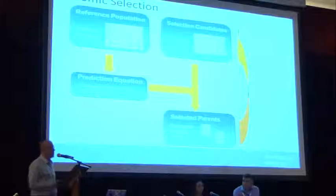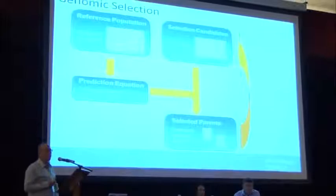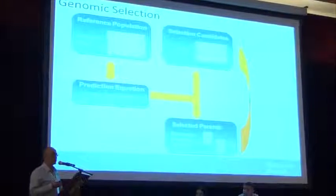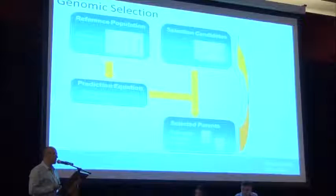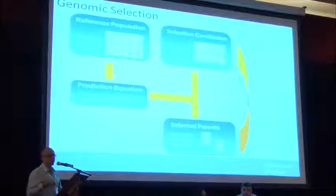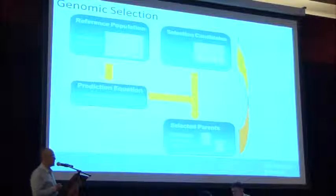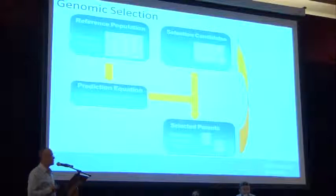What really makes genomic selection tick is this reference population — a population that you have done a genome-wide marker profile on. You have genetic markers distributed genome-wide, and you should have many of them. On this population you also have phenotypes, any trait measured in the field or potentially in the glasshouse. Using that information, you apply statistical methods to estimate a prediction equation — essentially estimated marker effects for all markers distributed across the genome.